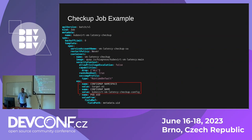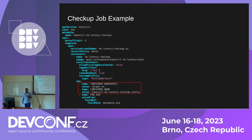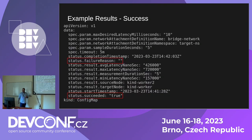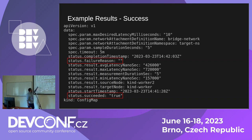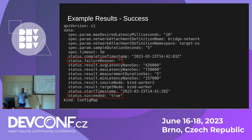The checkup Job configuration is mostly boilerplate that you don't need to change. All that matters are two environment variables that tell the checkup where the ConfigMap is located — the namespace and the ConfigMap name. After the checkup run completes, it writes results to that same ConfigMap, including whether it succeeded, start times, measurements taken, and which nodes the virtual machines were scheduled to.